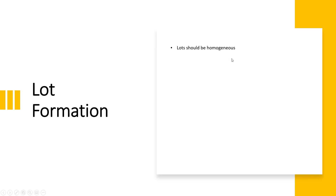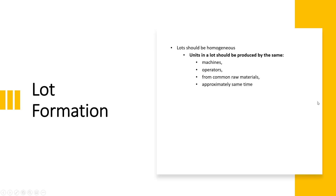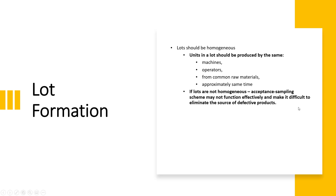Lot formation is important. The lot should be homogeneous — meaning only the same material or product should be in the lot. Units in a lot should be produced by the same machines, operators, and from common raw material at approximately the same time, so the attributes of those products are the same. If lots are not homogeneous, the acceptance sampling scheme may not function effectively and it becomes difficult to eliminate the source of defective products.